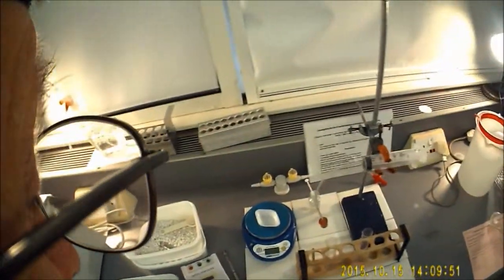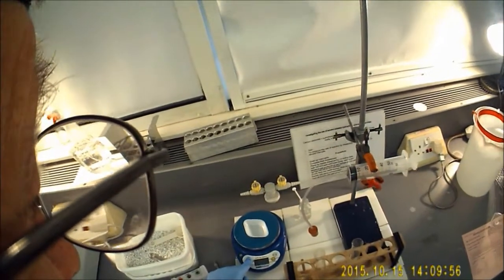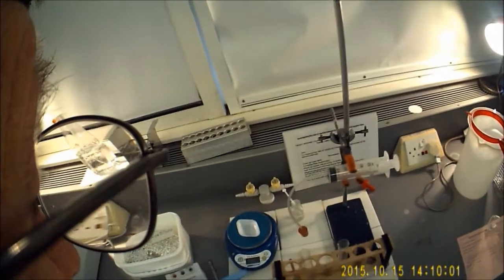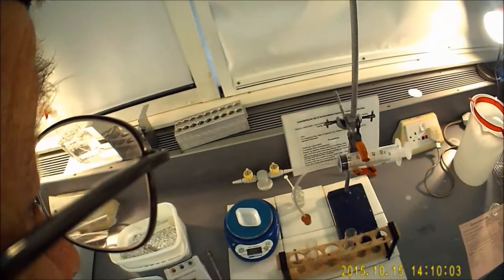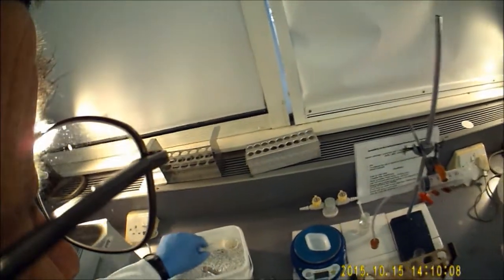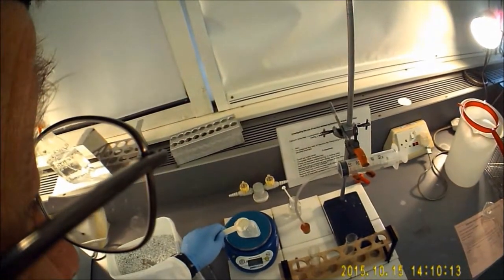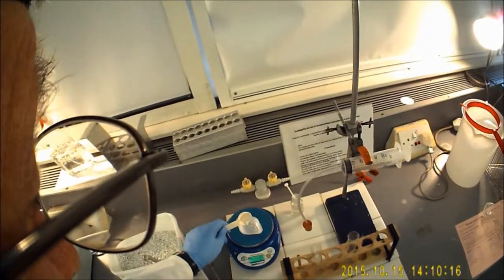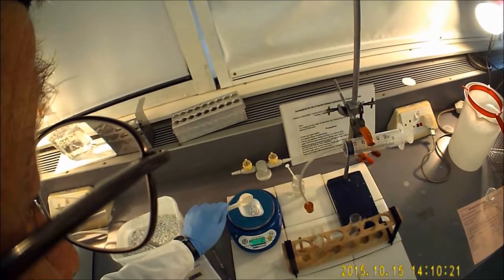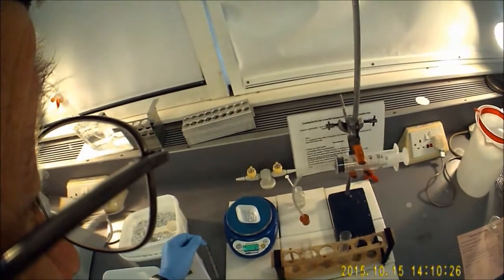The first thing you need to do is to weigh out one gram of calcium carbonate or marble chips. Put your weighing boat onto the scales and make sure you zero the scales. We don't want to weigh the weighing boat. And then you're going to add your calcium carbonate until you get one gram. And that's pretty much exactly one gram.